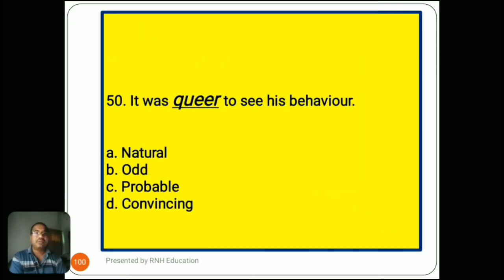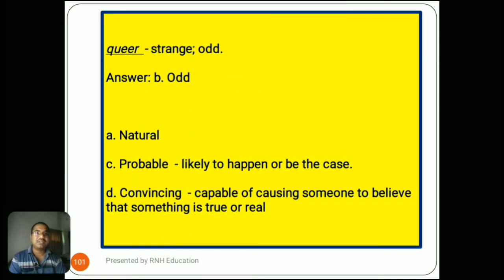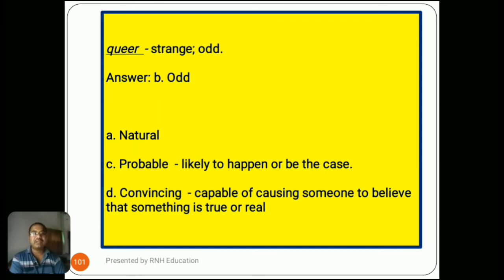Question number 50: 'It was queer to see his behavior.' Options are A) natural, B) odd, C) probable, D) convincing. Queer means strange and odd. So the answer is B) odd. Option C, probable, means likely to happen or be the case. Option D, convincing, means capable of causing someone to believe that something is true or real.